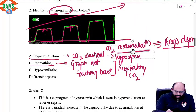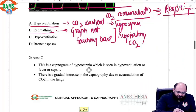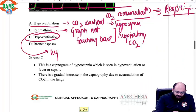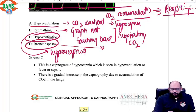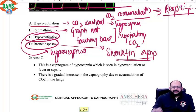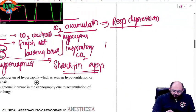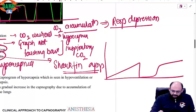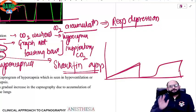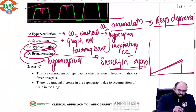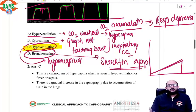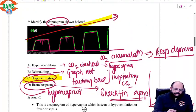In this capnogram the baseline is intact — the graph does touch the baseline. This points to hypoventilation, which is the reason for hypercapnia here. In bronchospasm you usually see a shark fin appearance, because the patient is not able to ventilate properly, leading to a very typical capnogram where the expiratory phase becomes very acute due to prolonged expiration — and hypocapnia may follow later. So the correct answer is hypoventilation; in hypoventilation there is CO2 retention and the graph shows an upward trend.